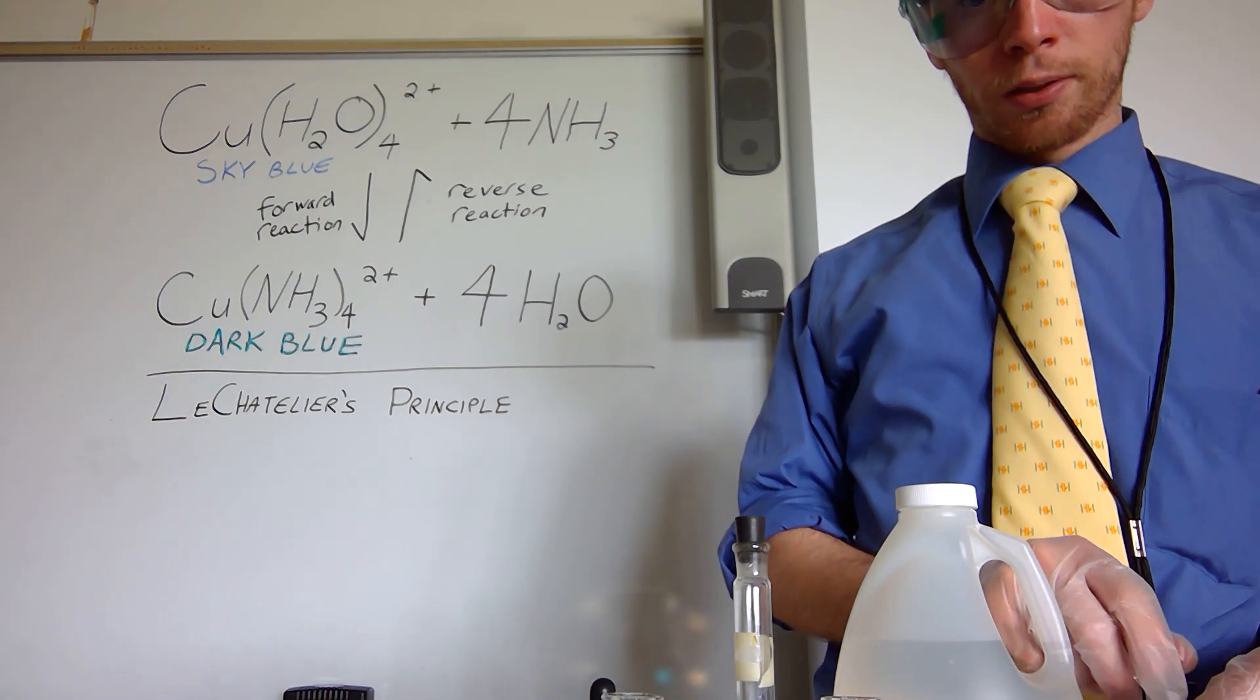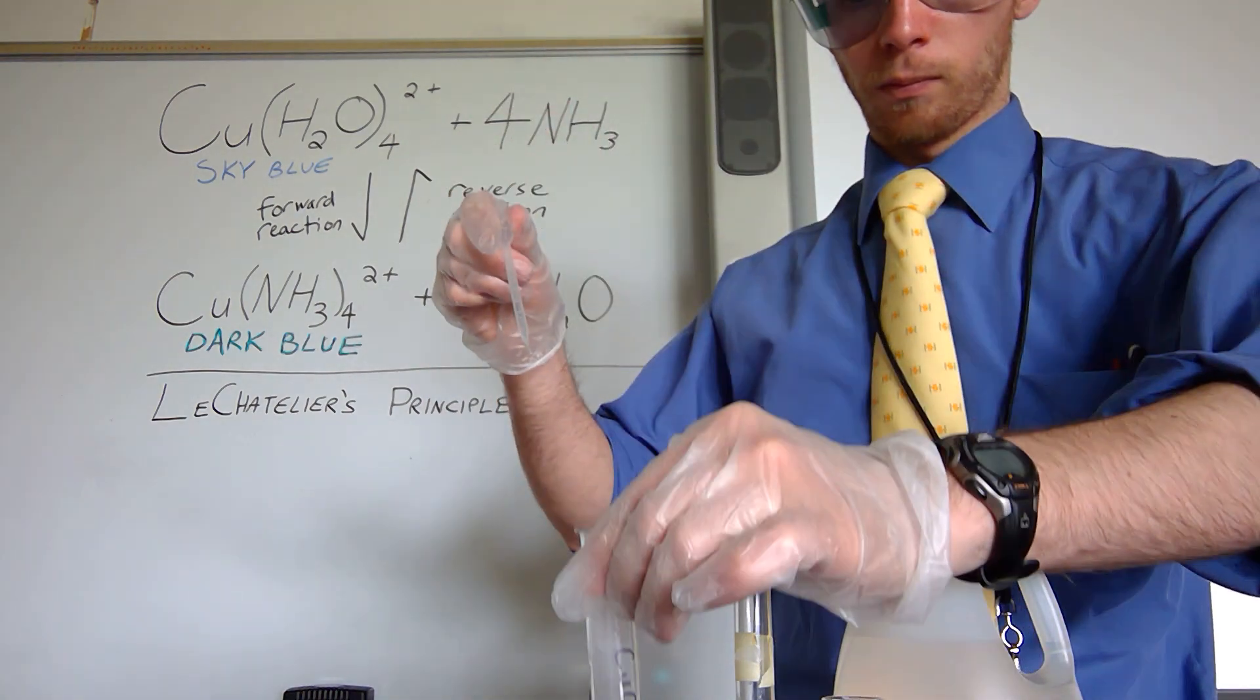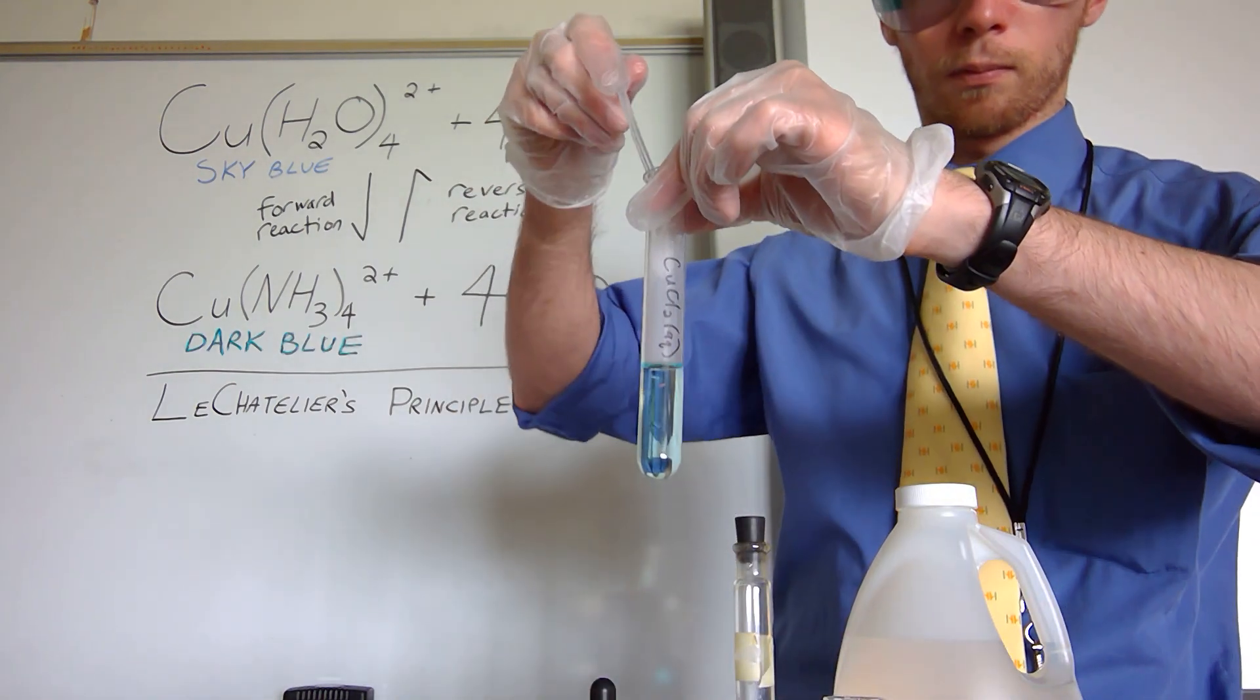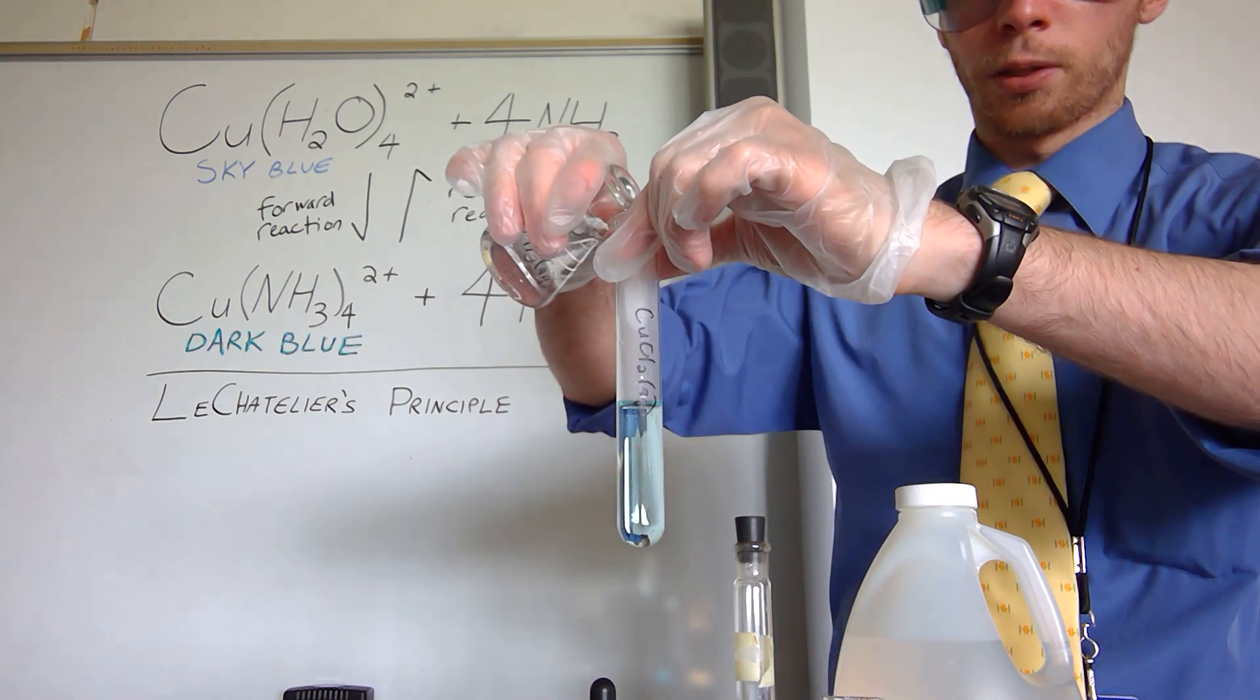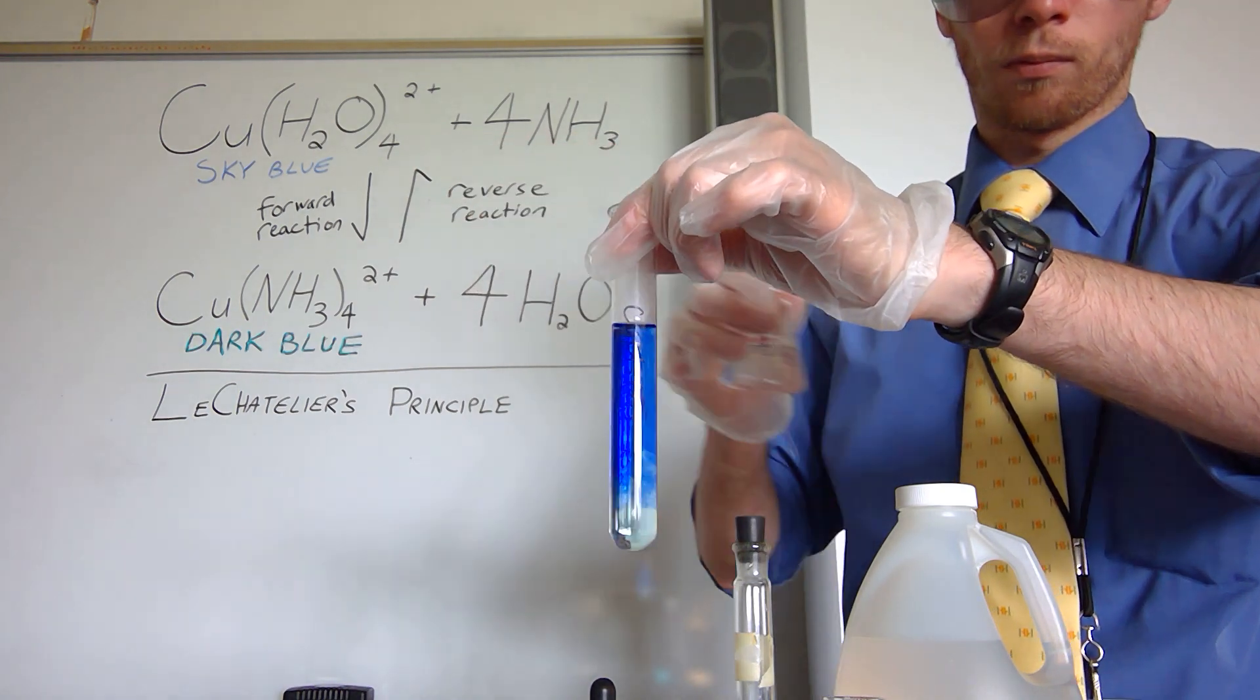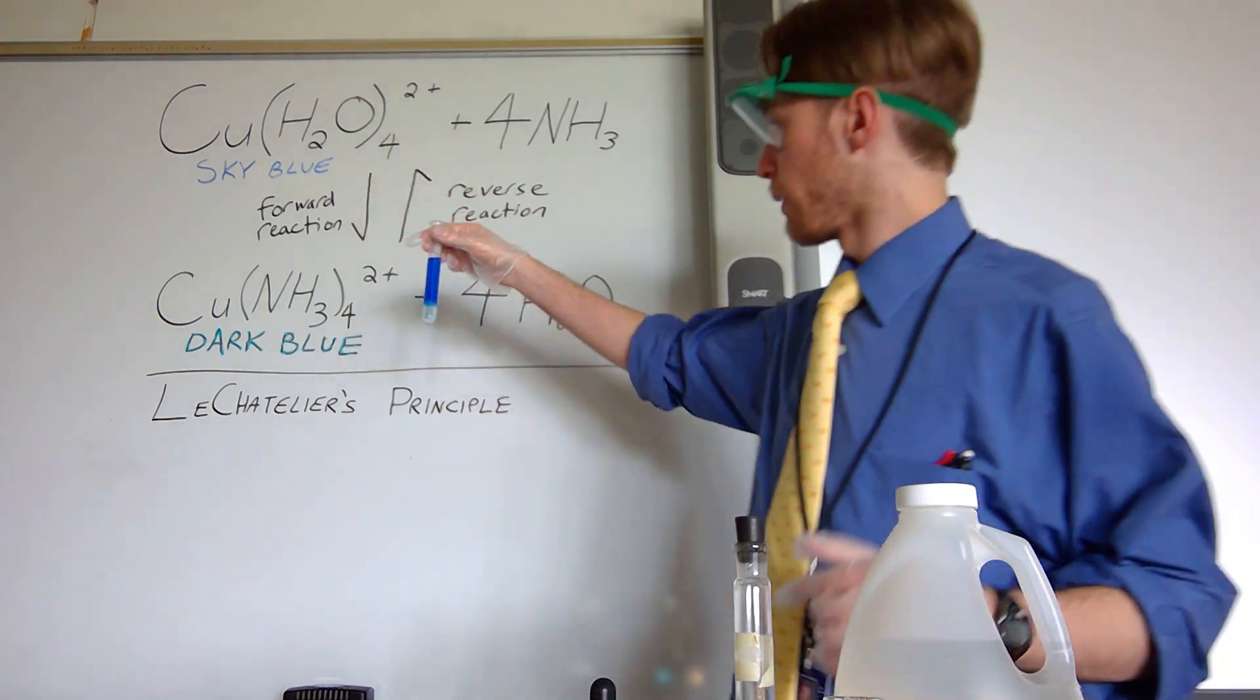We're going to shift it to the products by putting some ammonia in. That's going to take a little bit more since we use concentrated hydrochloric acid. And so we have a mostly blue solution here, so we've mostly converted back to this dark blue. We have shifted the equilibrium to the products here.